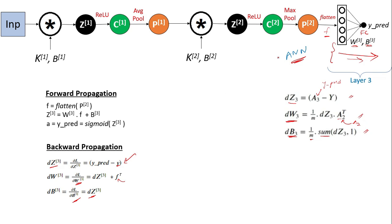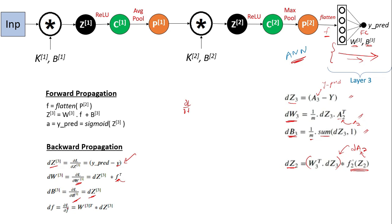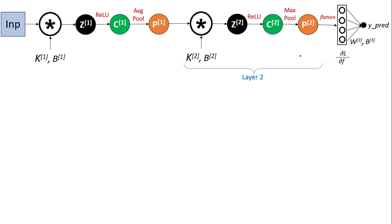Now it's time to move a step backward and find del L by del F. In my ANN video I obtained dA2, which was W3 transpose multiplied by dZ3 via matrix multiplication. Here F is our input instead of A2, so dF is obtained the same way: dF equals W3 transpose times dZ3. With that we are done with the third layer.